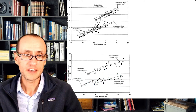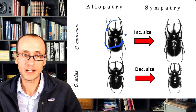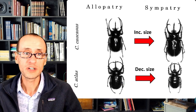Body length is related to horn length, and these allometric differences — the bigger you are, the bigger the horn — are true for both species. When they're in sympatry, they're very similar in size. When they're in allopatry, they're quite differentiated, with Caucasus being much bigger than Atlas. This is roughly what it looks like: a representative beetle in sympatry compared to allopatry, with Caucasus getting relatively bigger and Atlas becoming relatively smaller.